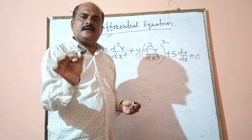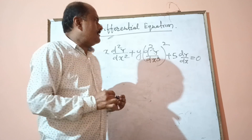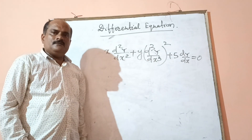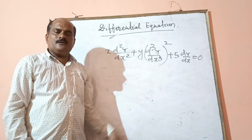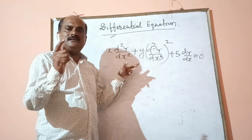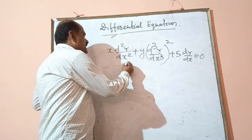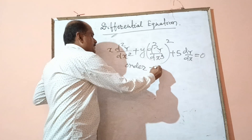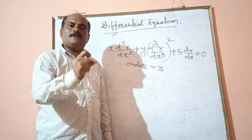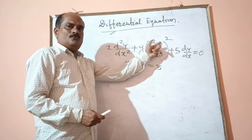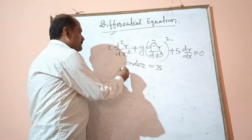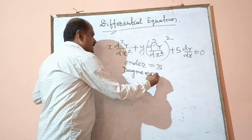The highest order derivative present is the order of the differential equation. In this next example, we have a first order derivative, a second order derivative, and a third order derivative. The highest order among 1, 2, and 3 is obviously 3. So the order of this differential equation is 3. The power of the highest order derivative — the third order — is 2. Therefore, the degree of this differential equation is 2.